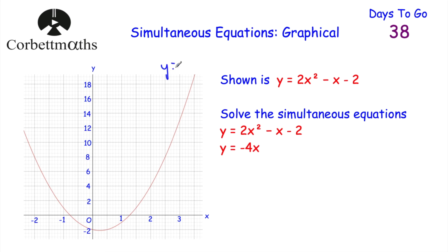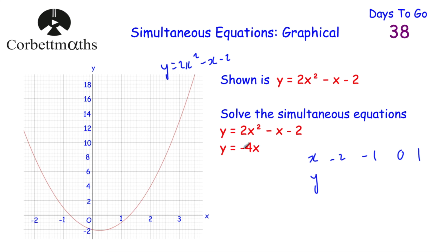The quadratic y equals 2x squared minus x minus 2 has been drawn for us. We just need to draw y equals minus 4x using an xy table with x values minus 2, minus 1, 0, and 1. Multiplying each by minus 4: minus 2 gives 8, minus 1 gives 4, 0 gives 0, and 1 gives minus 4. Let's plot those points and draw our graph of y equals minus 4x.